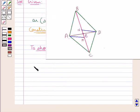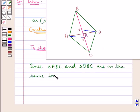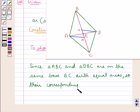Since triangle ABC and DBC are on the same base BC with equal areas, so their corresponding altitudes are equal.